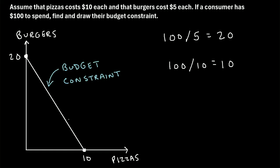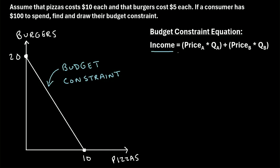This budget constraint line represents every combination of the quantity of burgers and pizzas that we could buy that would exactly equal our total income of $100. To find other combinations, we can use the budget constraint equation: income equals the price of good A times the quantity of good A, plus the price of good B times the quantity of good B.